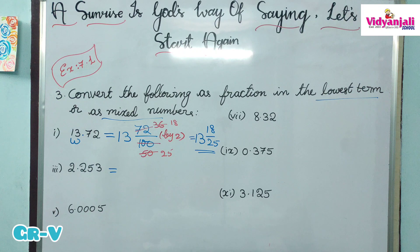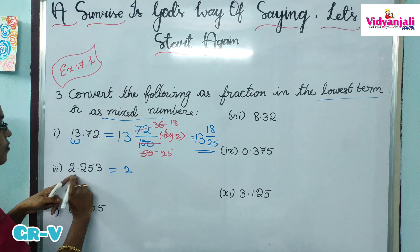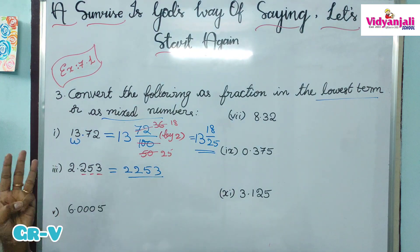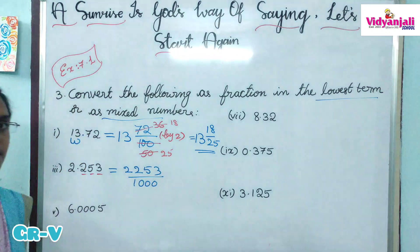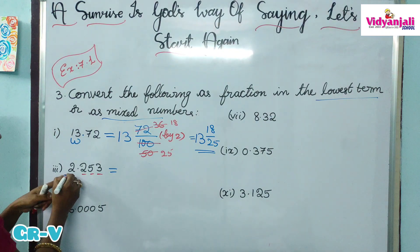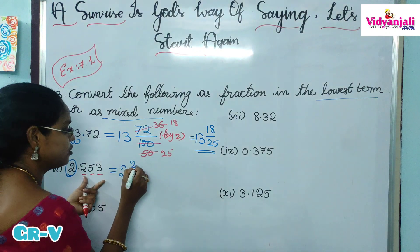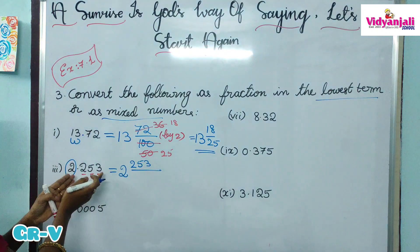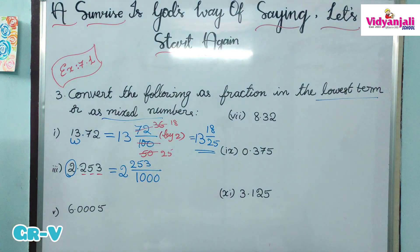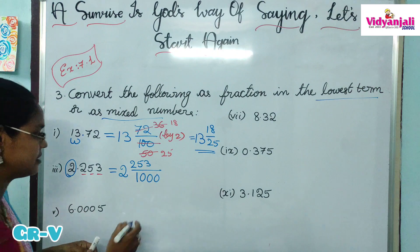Next: 2.253. How to convert this as a fraction? Method one: write everything without the point as the numerator — 2253 — by 1000, since there are 3 digits in the decimal part, so denominator is 1 after 3 zeros. Method two: whole part is 2, decimal part is 253, so write 2 and 253 by 1000. Here the numerator is odd and the denominator is even, so no cancellation. This is the final answer: 2 and 253 by 1000.